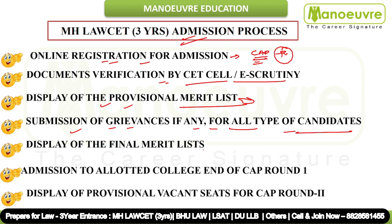After resolving grievances, the display of the final merit list takes place — that is your Round 1 merit list. Then comes admission to the allotted college and the end of CAP Round 1. Once the Round 1 merit list is out, the CET cell will allot you a college according to the colleges you selected and your marks. You need to go to that college, report there, and get the admission done.